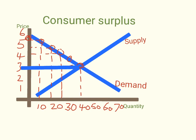The consumer surplus then is mathematically the area between the demand curve and the equilibrium price line — represented by this triangle here in the graph. The area inside this triangle is the total consumer surplus. Mathematically you can calculate the area of this triangle using one half times the base times the height, and that is the consumer surplus.